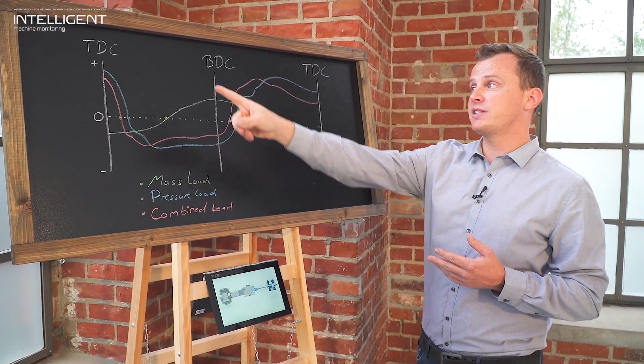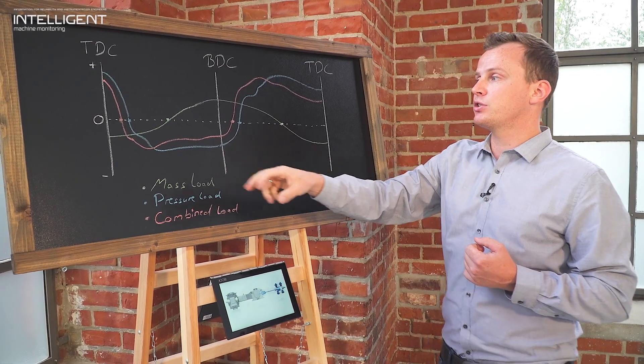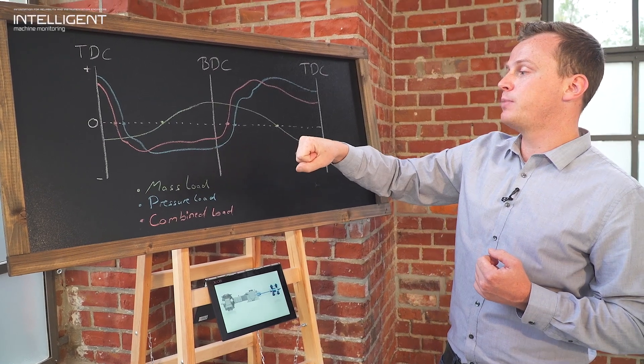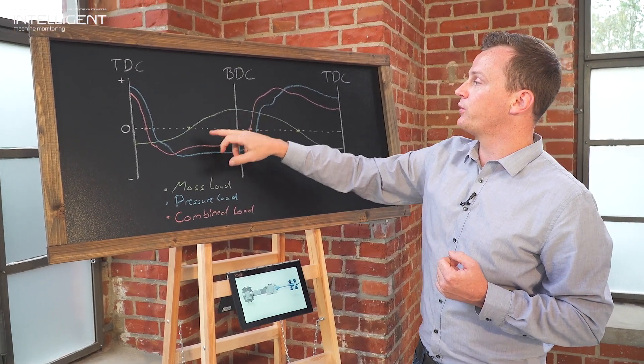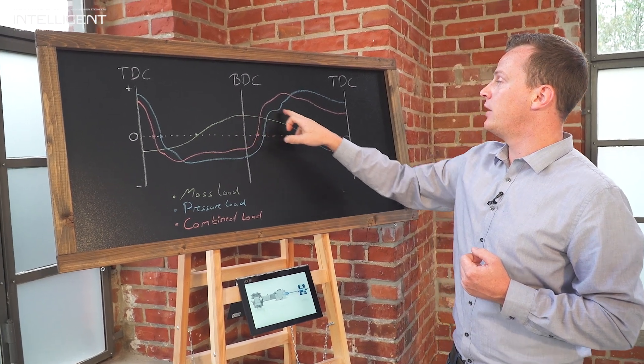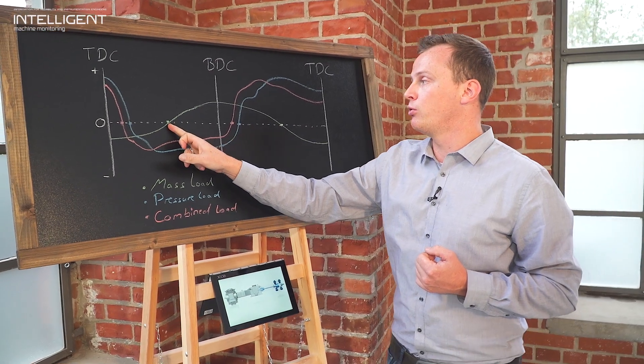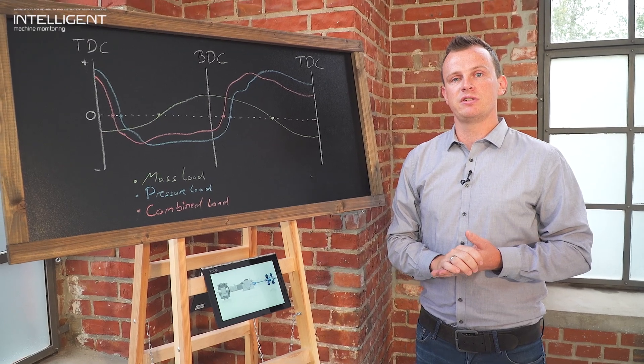So first when we start on the top dead center, the motor will pull back the piston to this direction. So we start from negative until we have our highest speed and then it has already to reduce the speed again. So our force changes here in the positive part and on the other way around when we are here it happens exactly the same. So we have our load reversal here and here at 90 and 270 degrees crank angle.